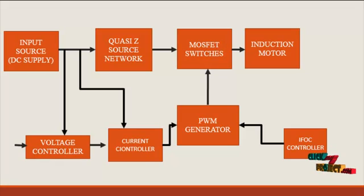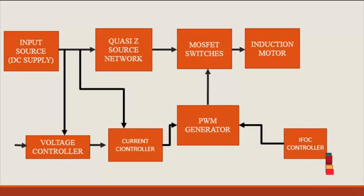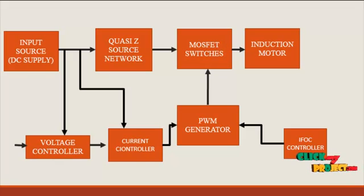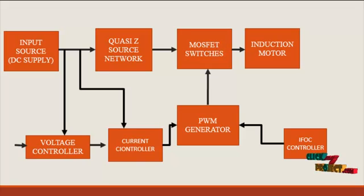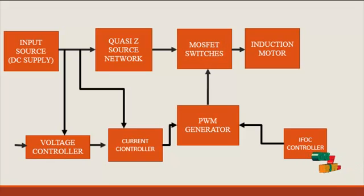For the quasi-Z-source network they have one capacitor and one inductor. The output of the network is connected with the inverter, which has MOSFET switches. Also the input source voltage is obtained from the source and fed into the voltage controller, where it is compared with the reference value.